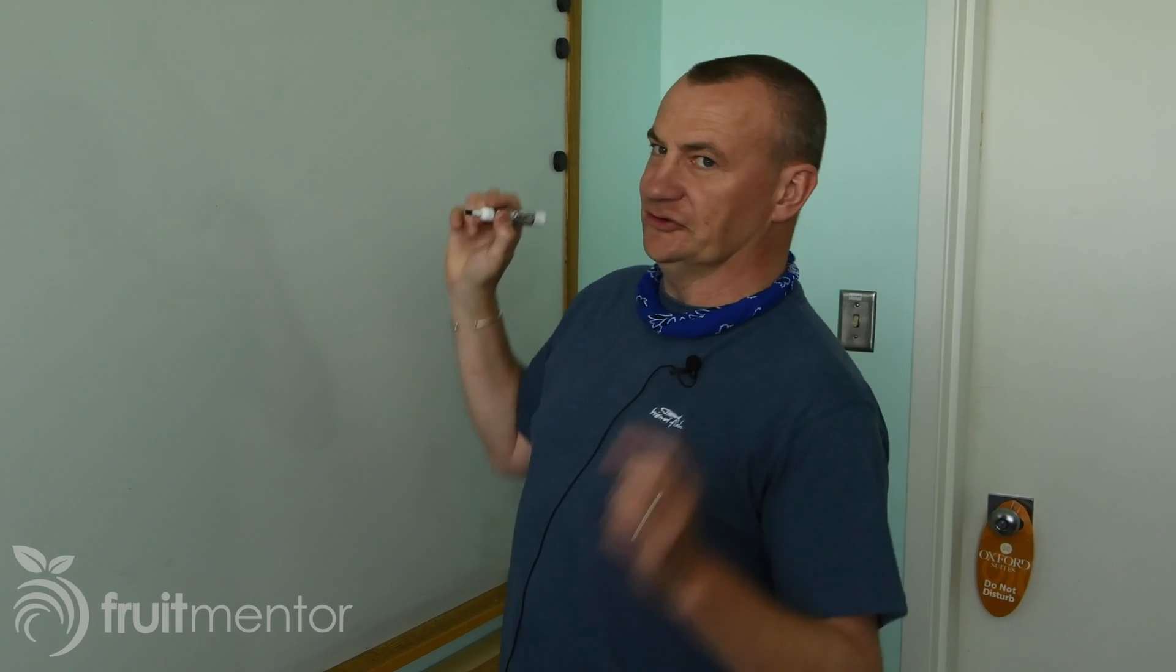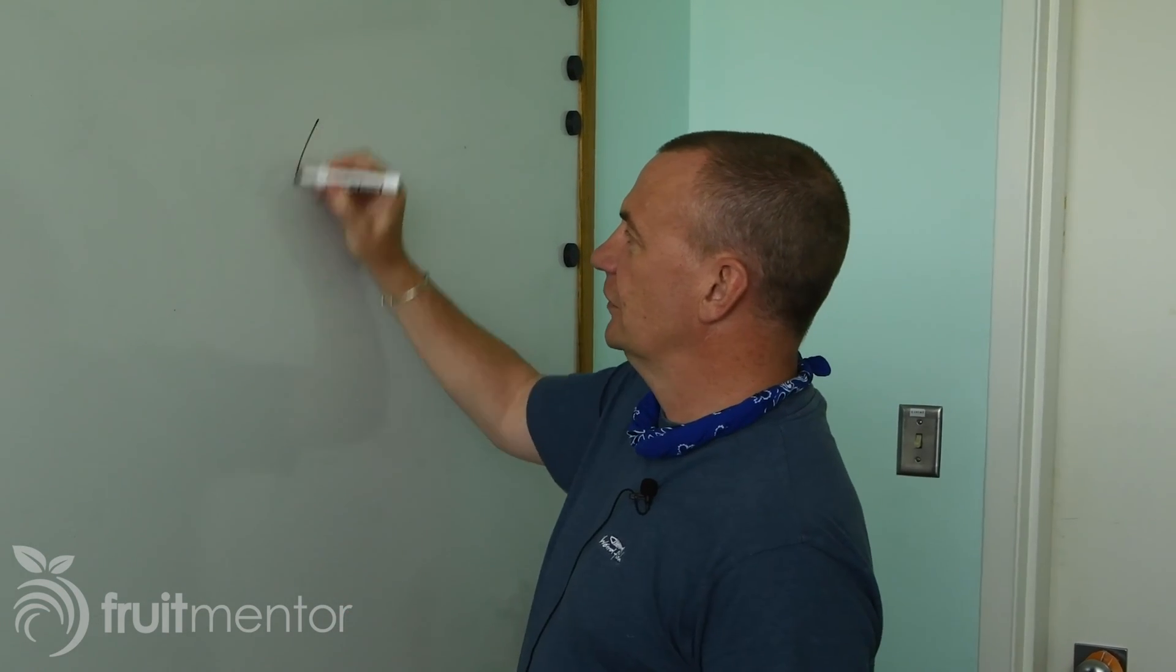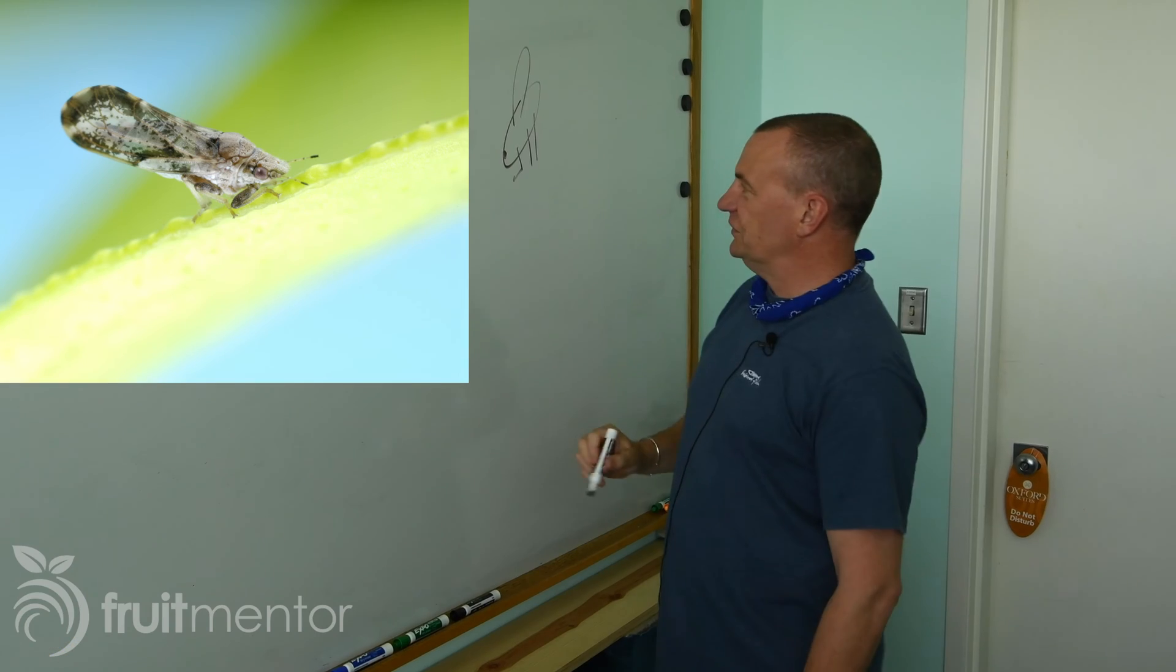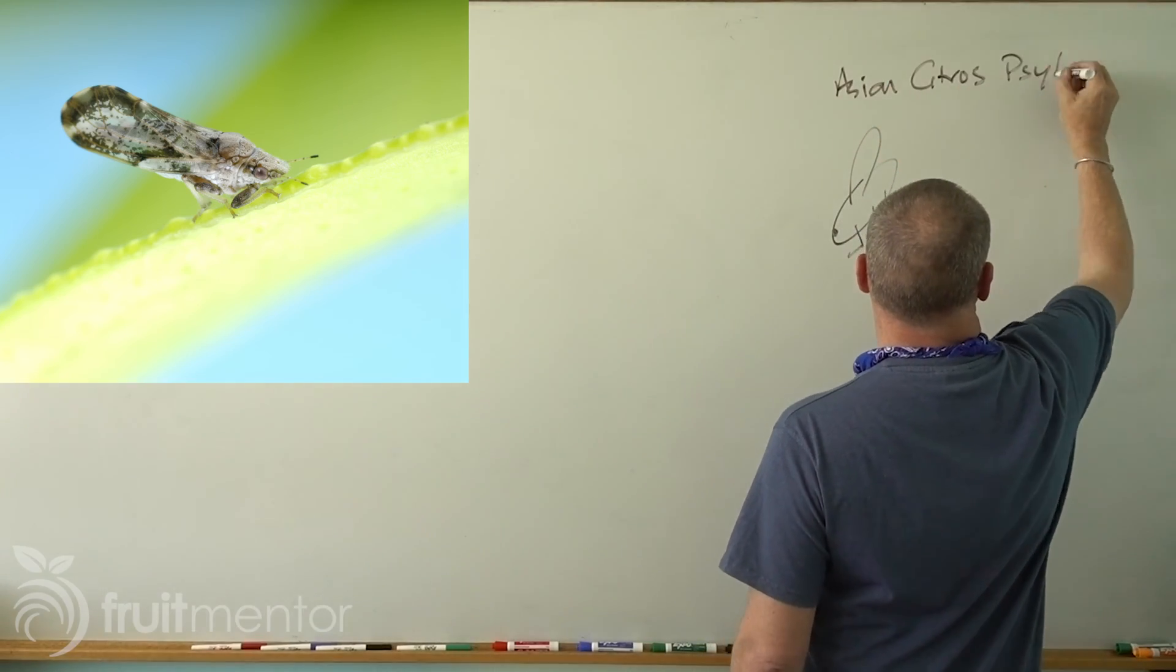So first thing is there's an insect, the Asian citrus psyllid, ACP, that spreads the pathogen that causes the disease around. So we've got an insect, which I'm really bad at drawing. It kind of sits like that on the leaf when it's feeding. It's with its nose down. So this is the Asian citrus psyllid.